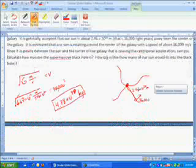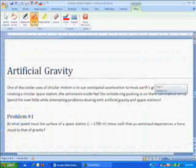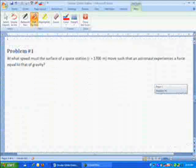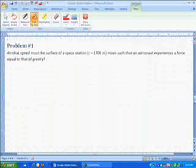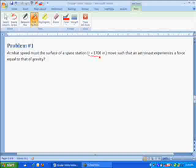Let's look now at a couple dealing with artificial gravity. The first problem is dealing with the space station. We're given the radius of the space station. The space station is moving in a circle. We've got the radius of 1700 meters.